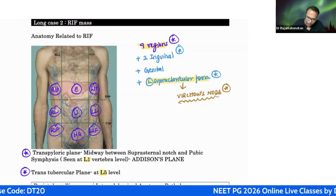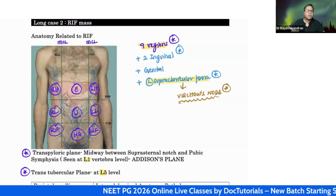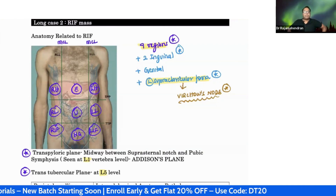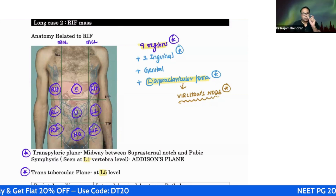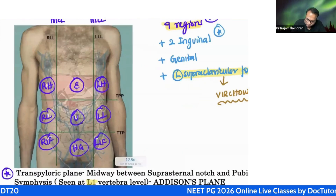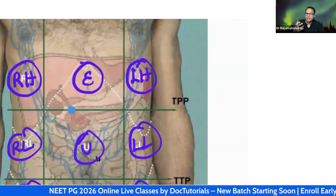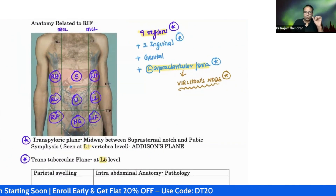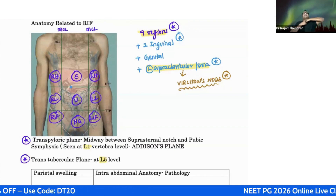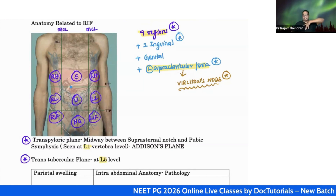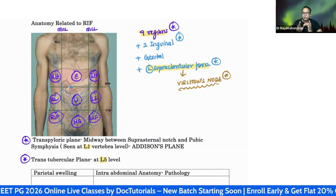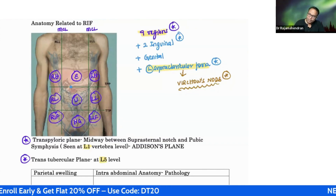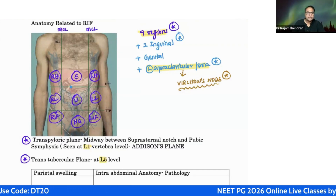Two vertical lines run at the mid-clavicular line on each side. The transpyloric plane is named because the pyloric sphincter lies at this level. Clinically, measure from suprasternal notch to pubic symphysis - if the total is 40 cm, at 28 cm you draw the transpyloric plane. This is also called Addison's plane and lies at L1 vertebra.